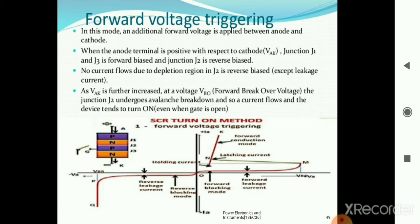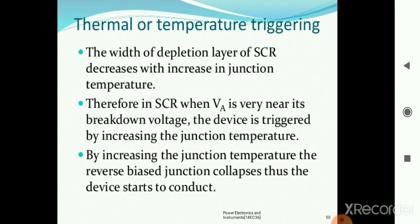When the anode to cathode voltage is increased while in forward biased condition, the SCR will automatically start conducting. When the anode terminal is positive with respect to cathode (VAK), junctions J1 and J3 are forward biased and junction J2 is reverse biased, so no current flows through the depletion region. But a small leakage current still flows. If we keep increasing the voltage, a break over occurs at junction J2 and the SCR starts conducting. This is the first method of triggering.